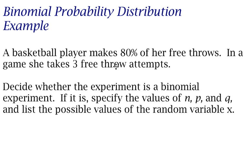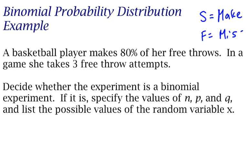The second thing is that there are two possible outcomes. In this case, she's either going to make or miss the free throw. So a success is going to be a make and a failure is going to be a miss. Now, that doesn't mean the probability of a make is 50% and the probability of a miss is 50% — it's not a 50-50 situation.